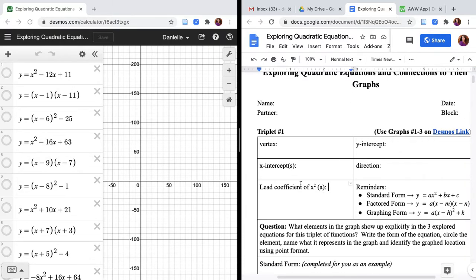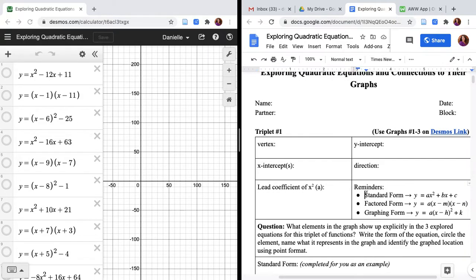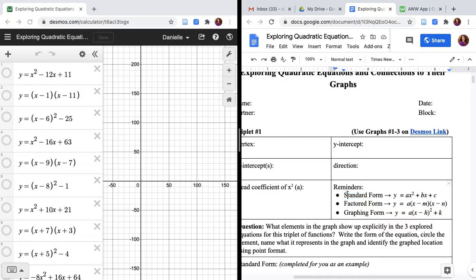For example, we would want you to take a look here at these equations and be able to tell us which one is standard form. This is a vocabulary piece: when we say standard form or you look for an equation that is in standard form, it's going to look like this—y equals, or f(x) equals, ax² + bx + c.